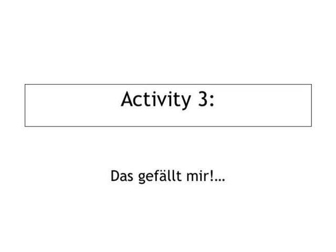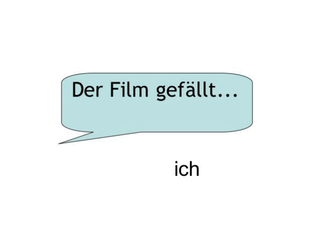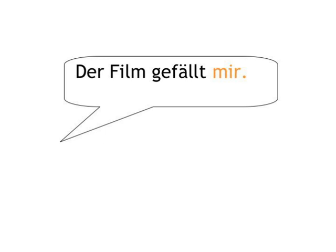Activity 3: Das gefällt mir. In Activity 3, you'll be talking about things appealing to someone. Use the verb 'gefallen.' You'll hear: 'der Film gefällt ich.' You form the sentence: 'der Film gefällt mir.' Let's practice.